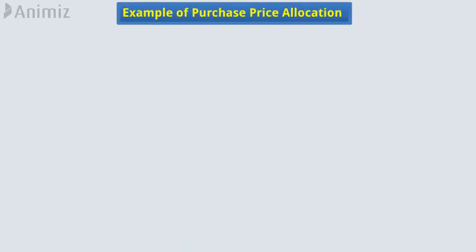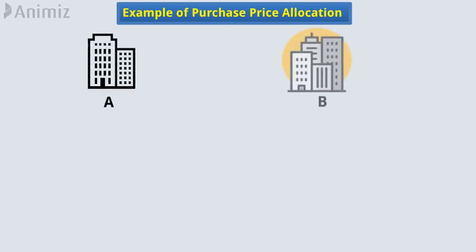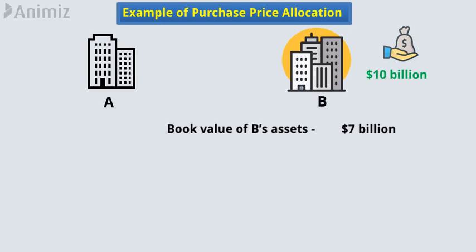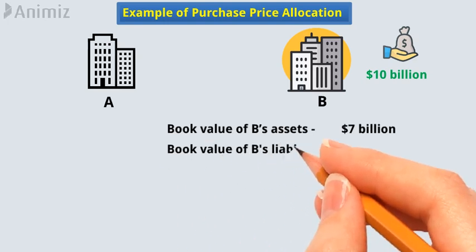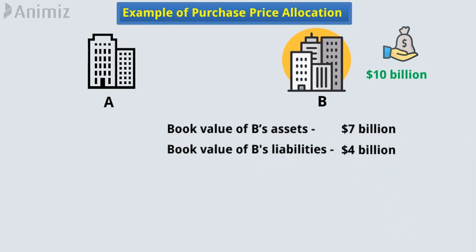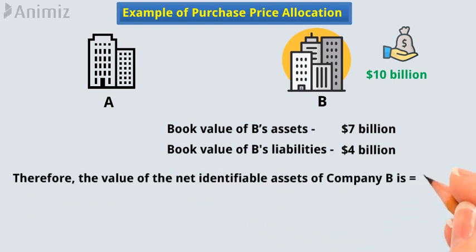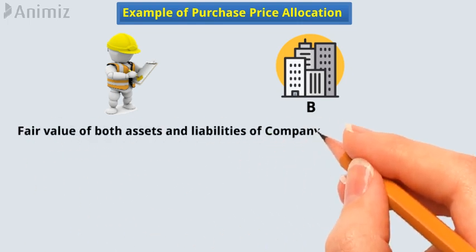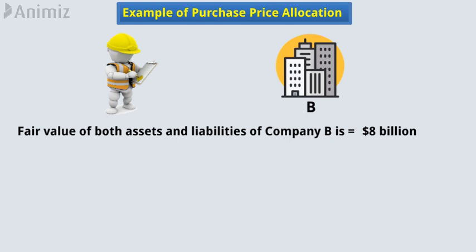Example of Purchase Price Allocation: Company A recently acquired Company B for $10 billion. The book value of Company B's assets is $7 billion, while the book value of the company's liabilities is $4 billion. Therefore, the value of the net identifiable assets of Company B is $3 billion. The estimate of an independent business valuation specialist figured out that the fair value of both assets and liabilities of Company B is $8 billion.